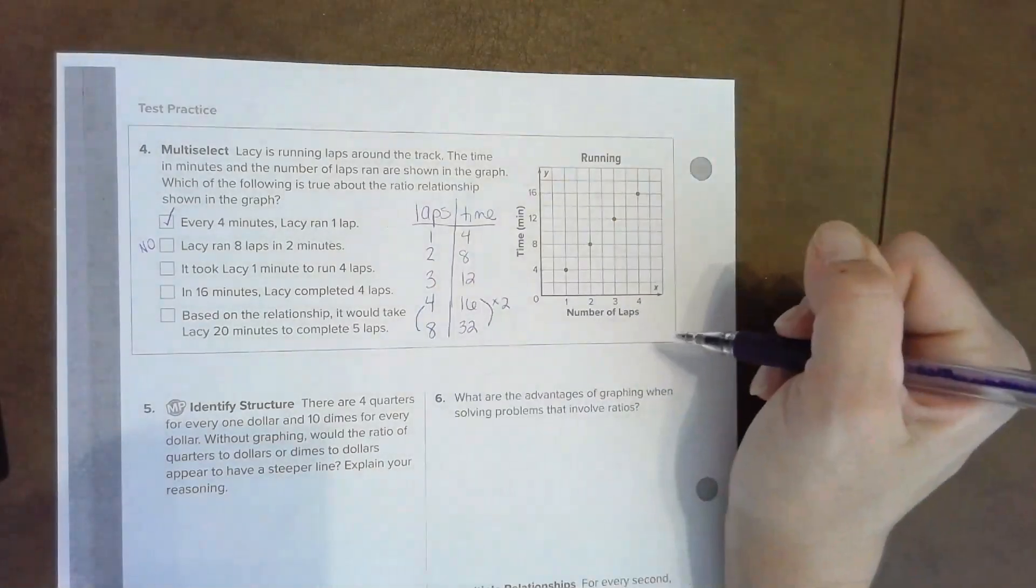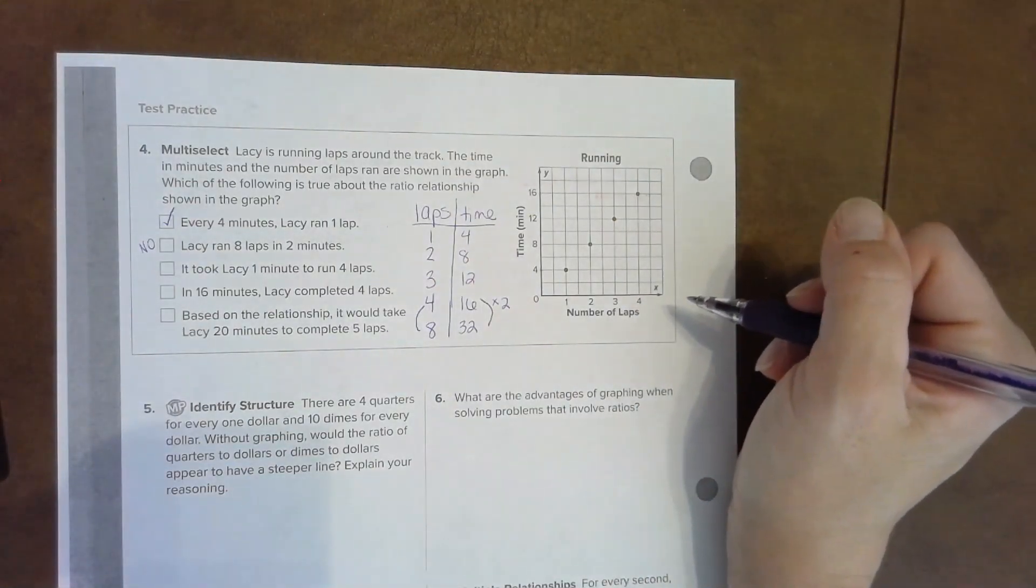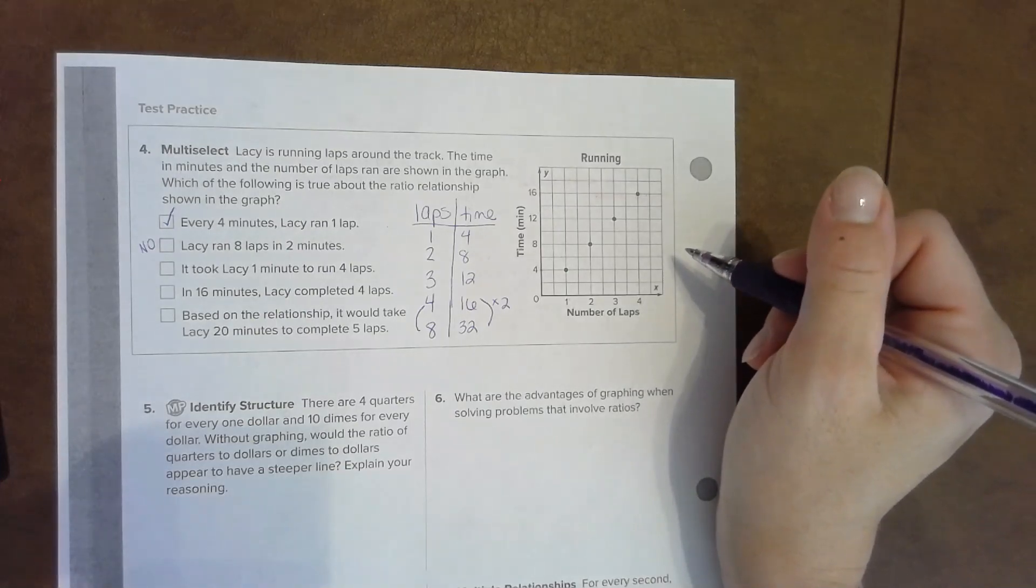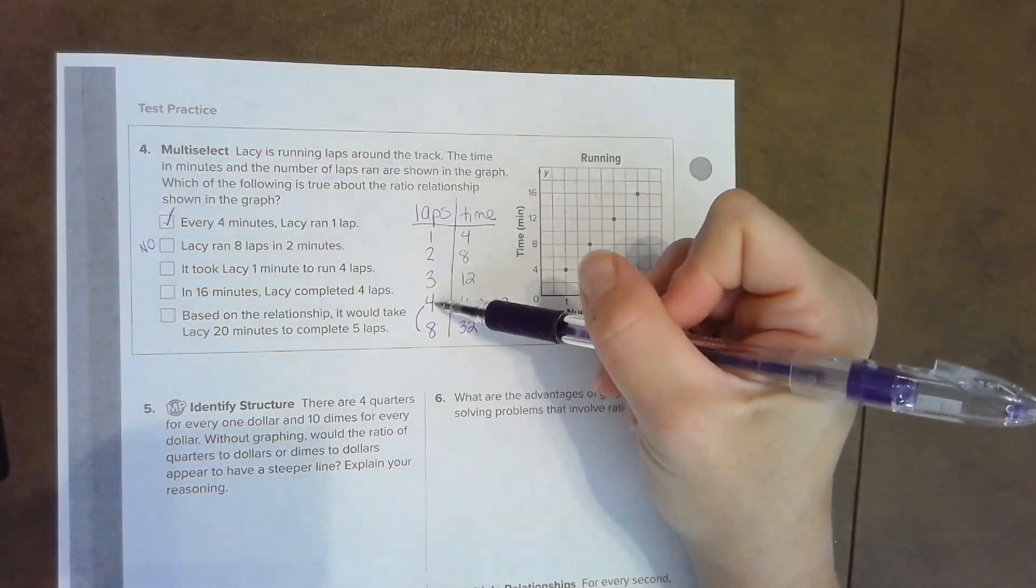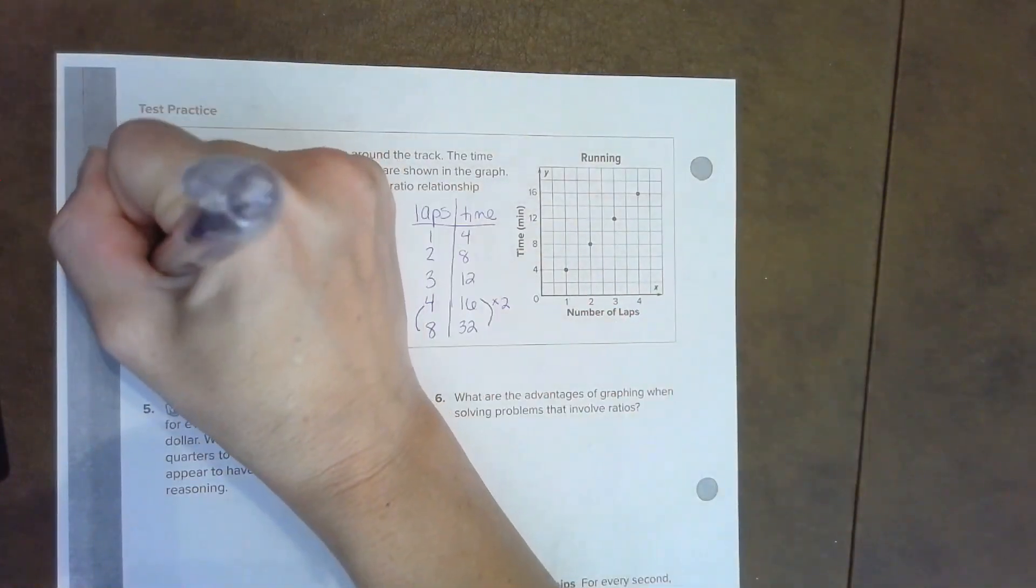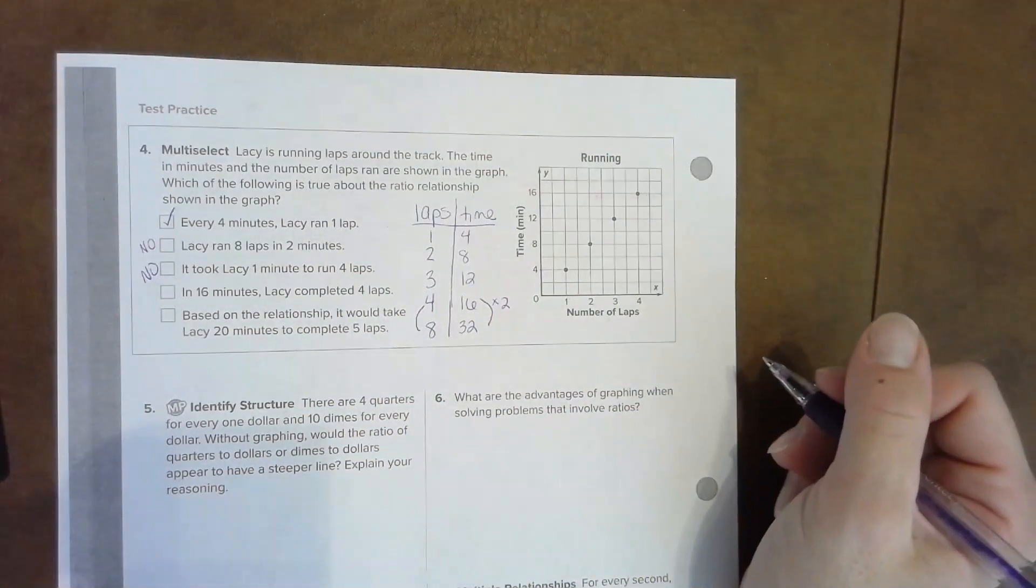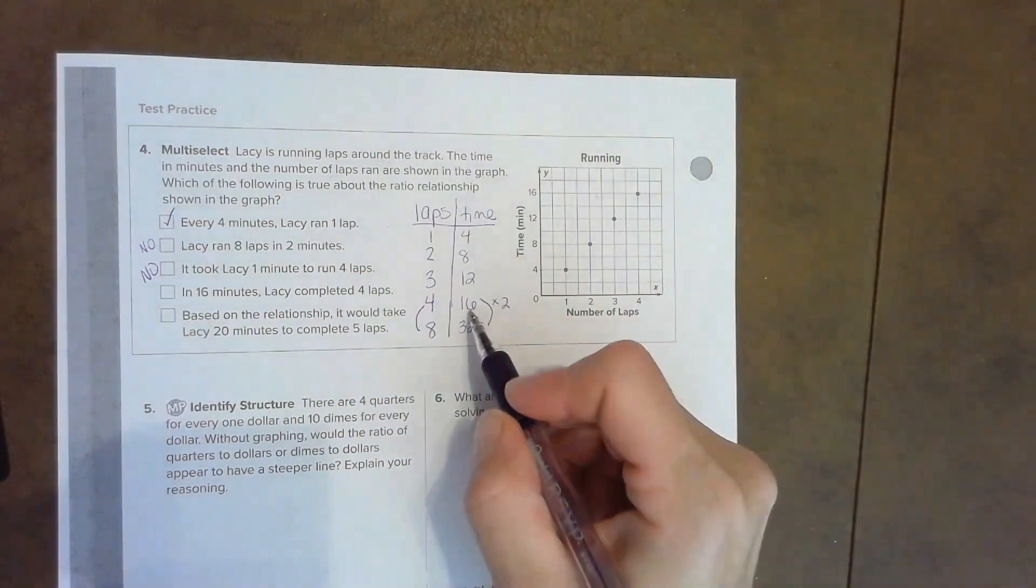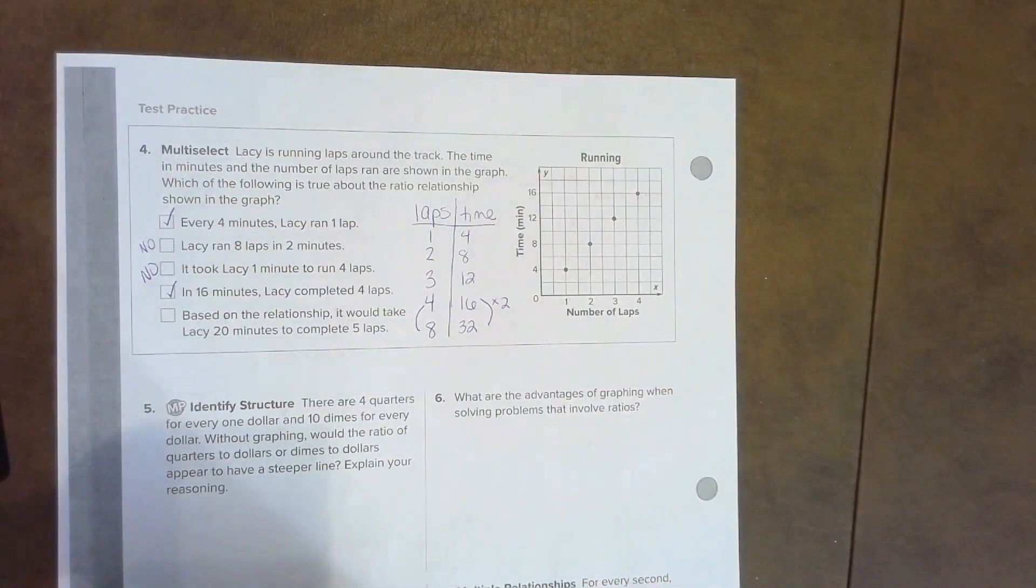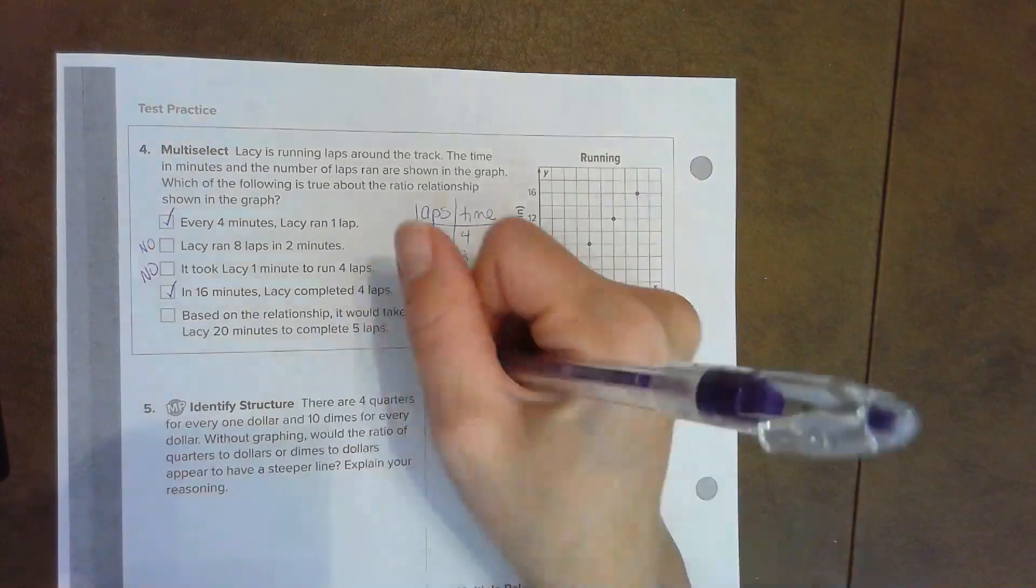Thirty-two minutes to do the eight laps, so I can prove that that one's not right. It took Lacey one minute to run four laps. Well, here's four laps in our table. Did it take her one minute? No, that's not correct. In 16 minutes—here's 16—Lacey completed four laps. Yes, she did.